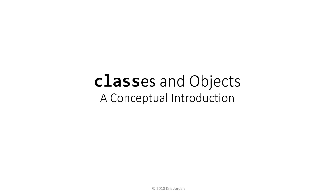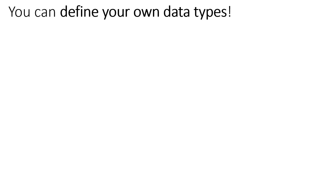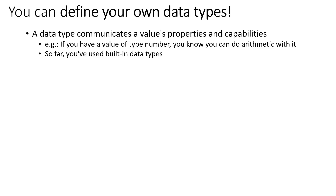In this video we'll take a conceptual look at the idea of classes and objects, which give us the ability to model more complex data types in our programs. It turns out you can define your own data types besides the ones that are built into our programming language. Remember, a data type communicates what we can do with a value in our program — its properties and its capabilities. So if you have a number, you know you can do arithmetic with it. So far we've only used the built-in data types: string, boolean, number, and arrays.